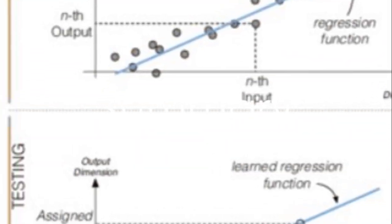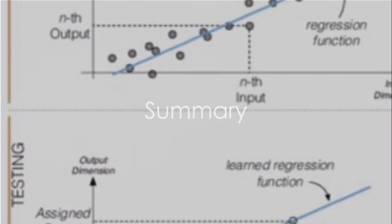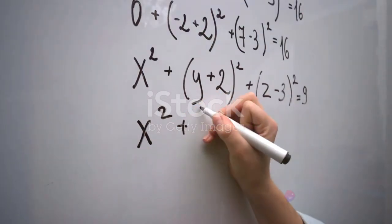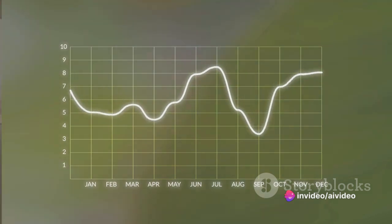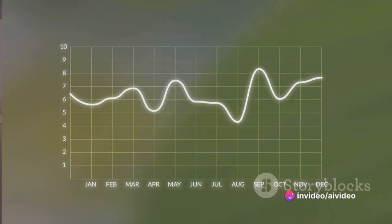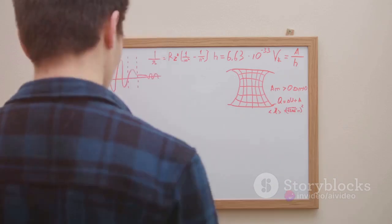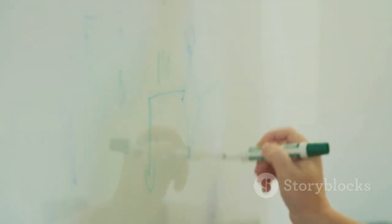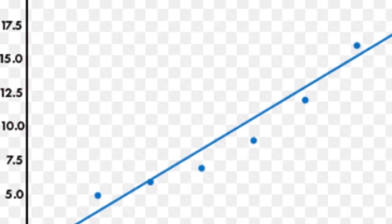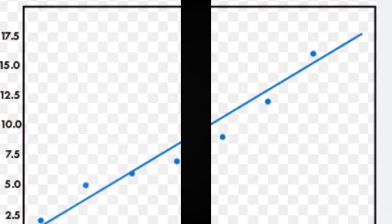To summarize, machine learning models aim to capture the relationship between input and output features. In the case of linear regression, the model fits a straight line to the data. The optimal fit is found by minimizing the cost function, specifically the mean squared error, which is achieved by finding the optimal values for M and C. This process helps ensure that predicted weights closely match actual weights, providing the best fit for our data.